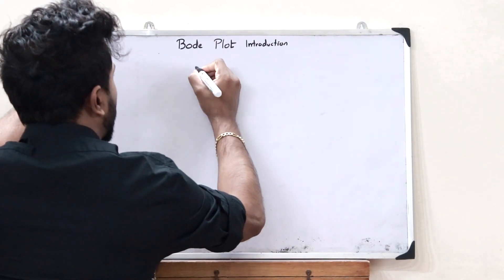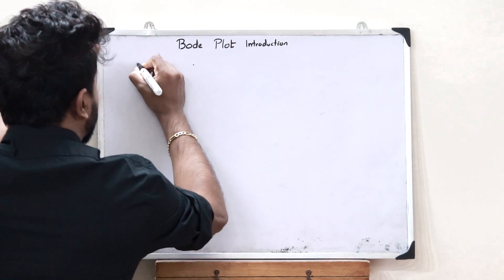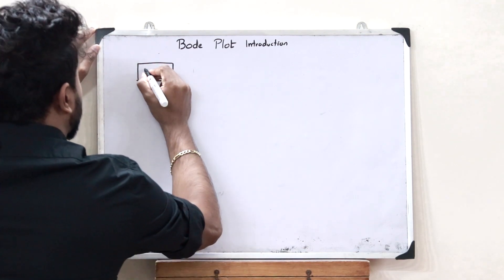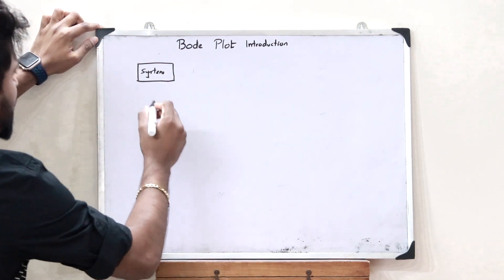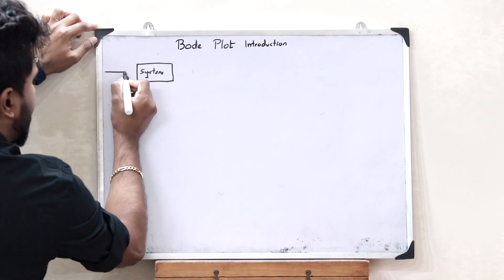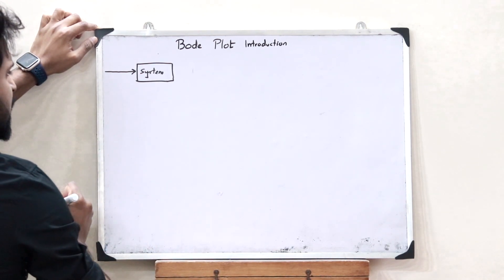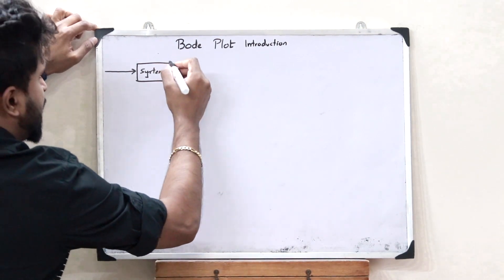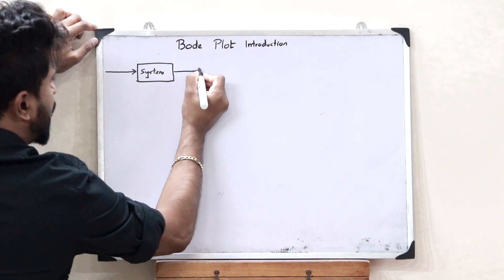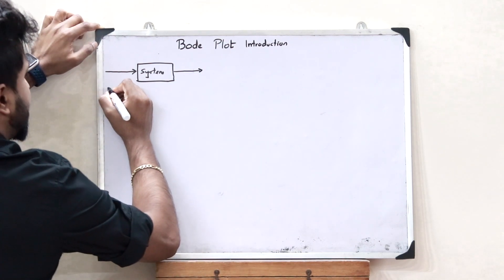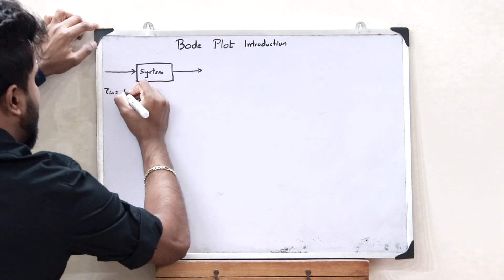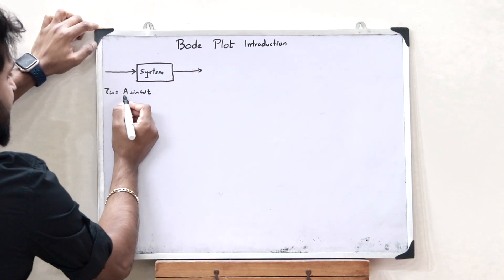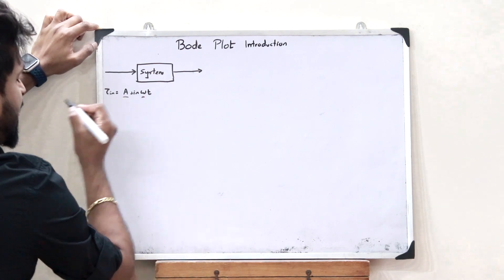Let us consider a particular control system. Now let us assume that we are providing a particular input to this control system. When we provide a particular input, we would obtain an output. Let the input signal be given as A sin(ωt), where A is the amplitude and ω is the frequency.